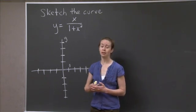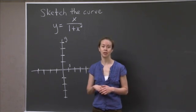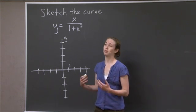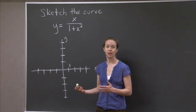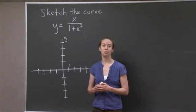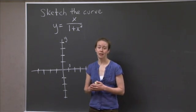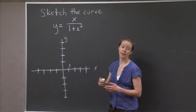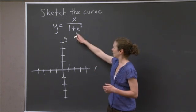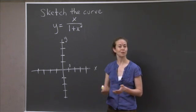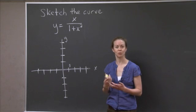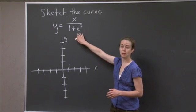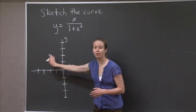Now one of the things you always do first is make sure that you understand where the function is defined. We have to check right away: are there any values of x for which this function is not defined? Because we have a rational function, we have to make sure that the denominator is never equal to 0. But the denominator is 1 plus x squared. Since x squared is always greater than or equal to 0, once I add 1, I'm always positive in the denominator. So I don't have to put any vertical asymptotes.